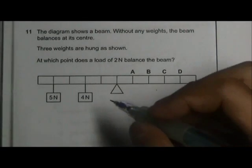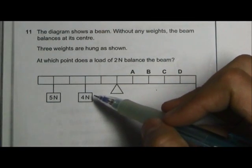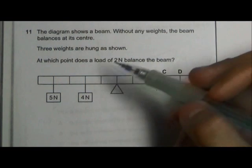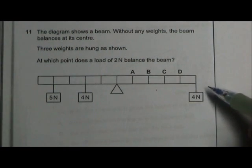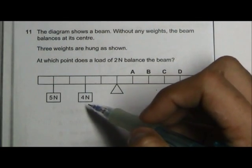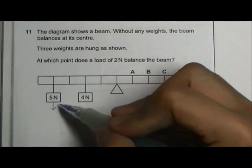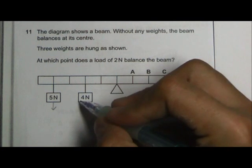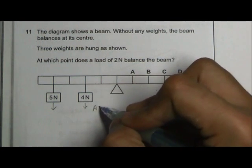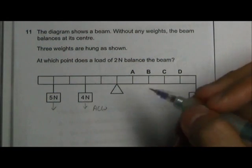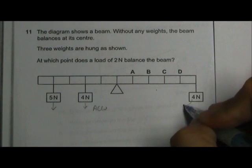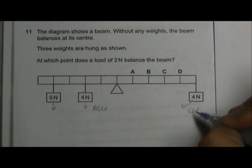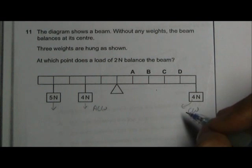Okay, we have a beam balance here, so we have a 5N and 4N hanging on the left side and a 4N hanging on the right side. So this 5N and 4N, they are acting downwards, so they will result in an anti-clockwise moment. And this 4N, because it's turning this way, it will result in a clockwise moment. So now let's calculate the total anti-clockwise moment and clockwise moment.